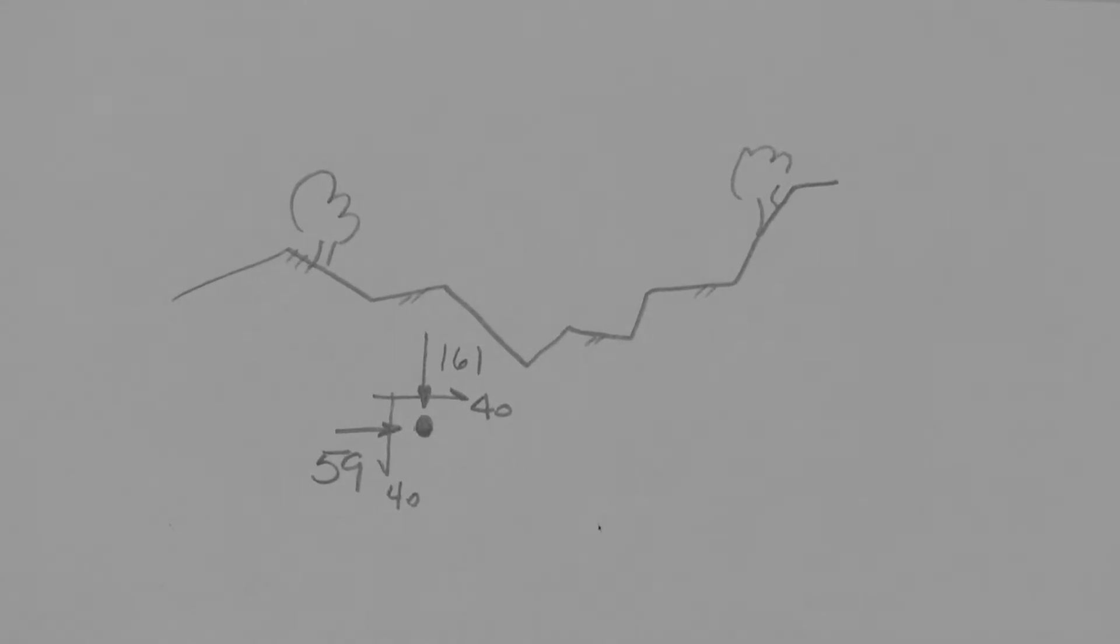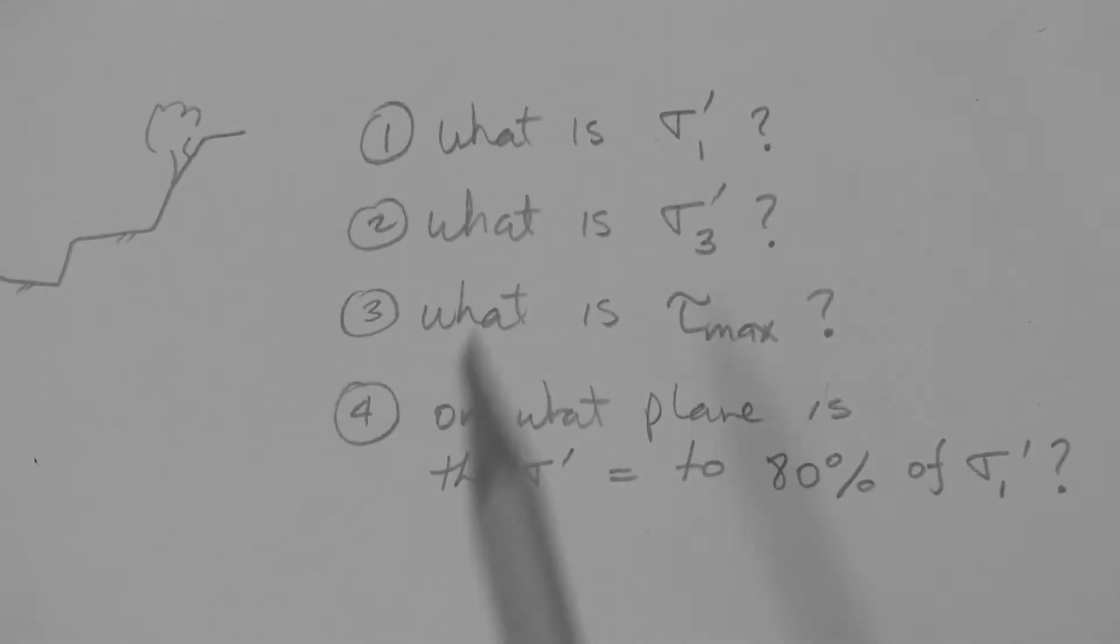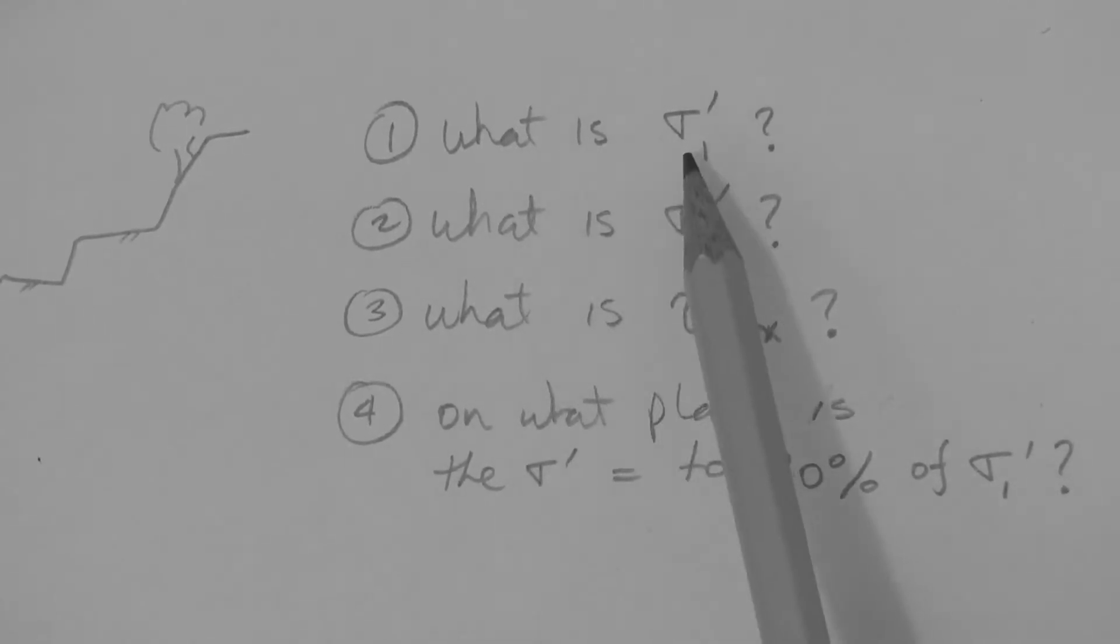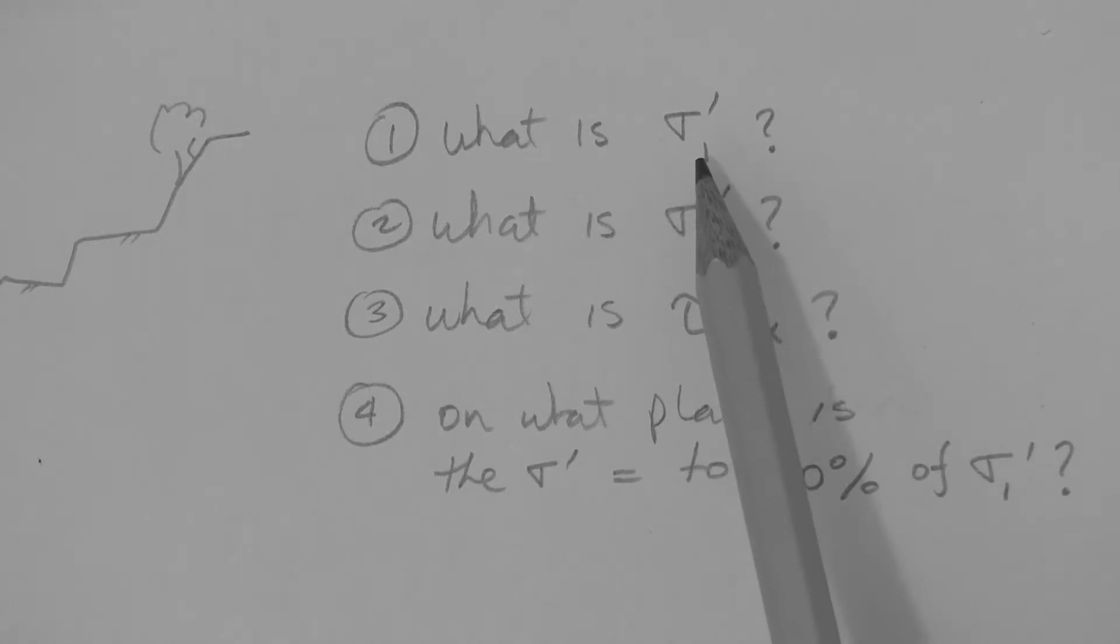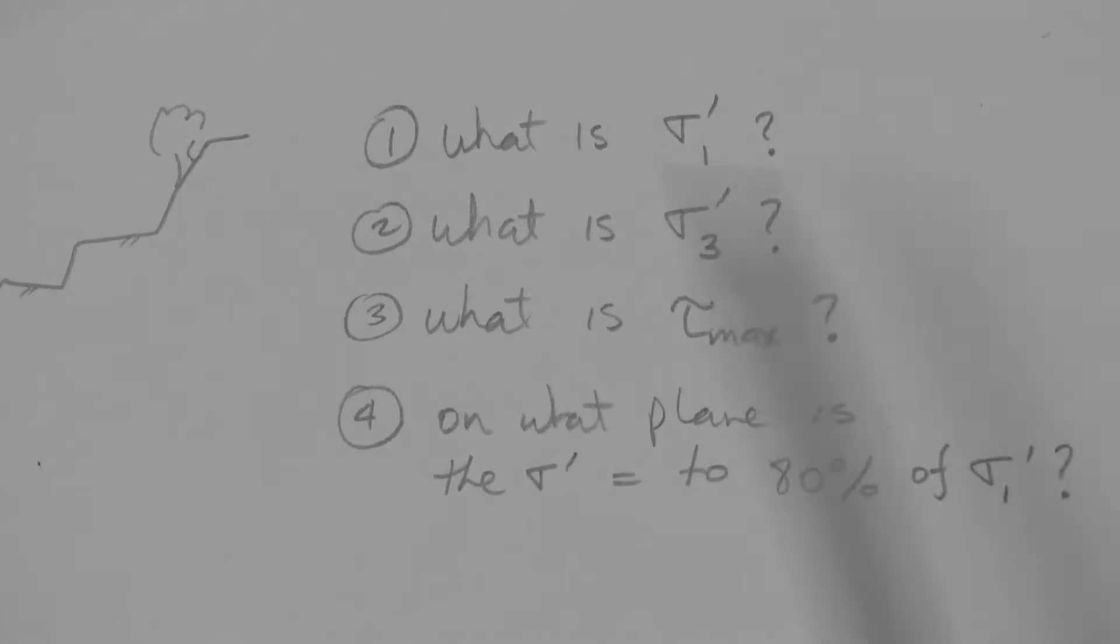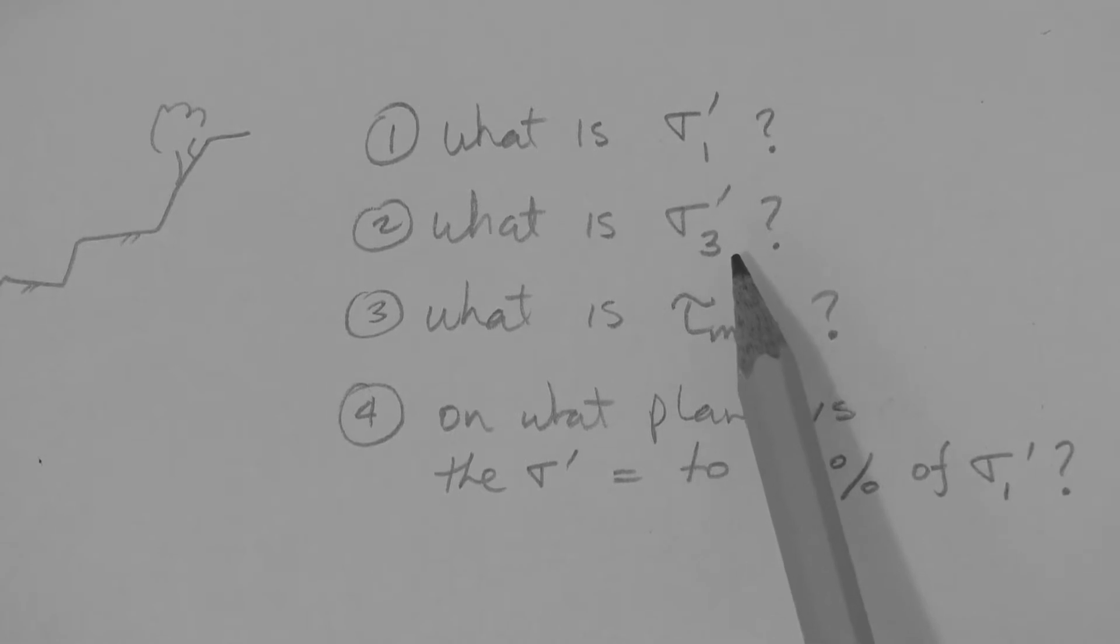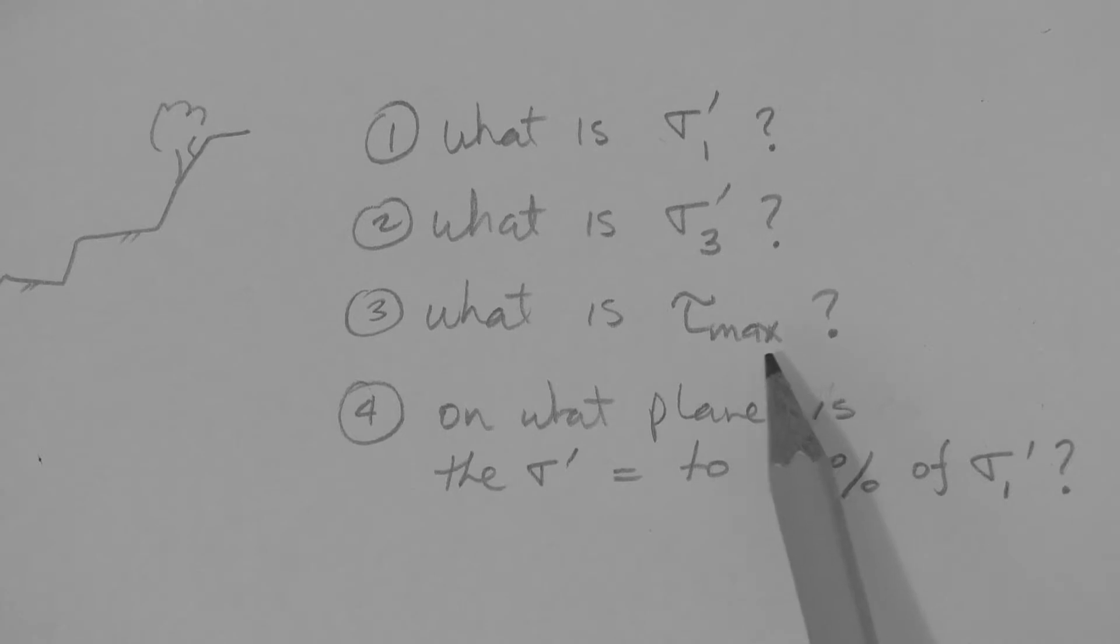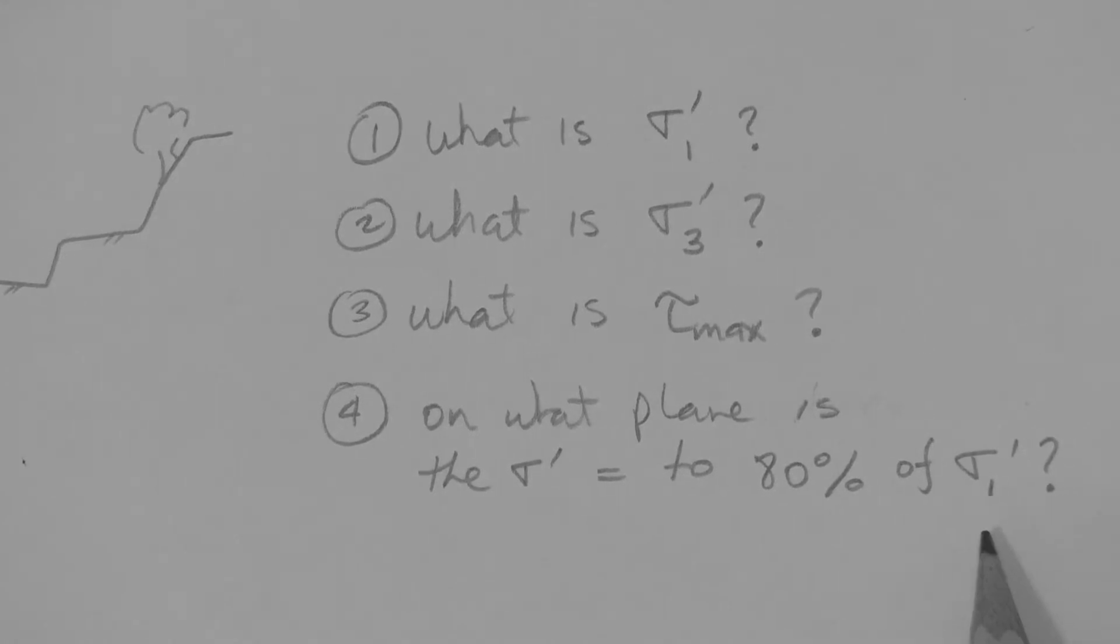So we are going to answer four questions here. The first question is what is the major principal effective stress at the point? The second question what is the minor principal effective stress at the point? The third, what is the magnitude of the maximum shear stress at the point? And the fourth, on what plane is the effective stress equal to 80% of the major principal effective stress?